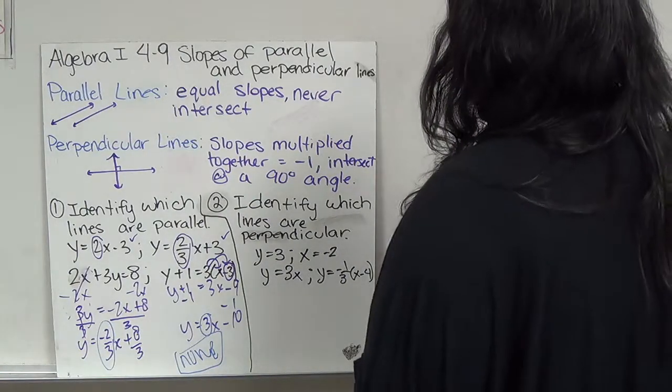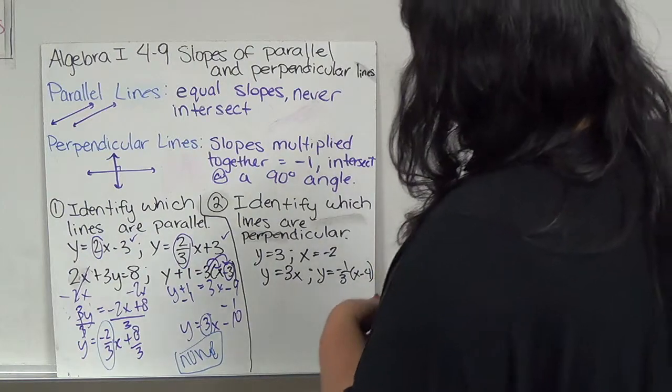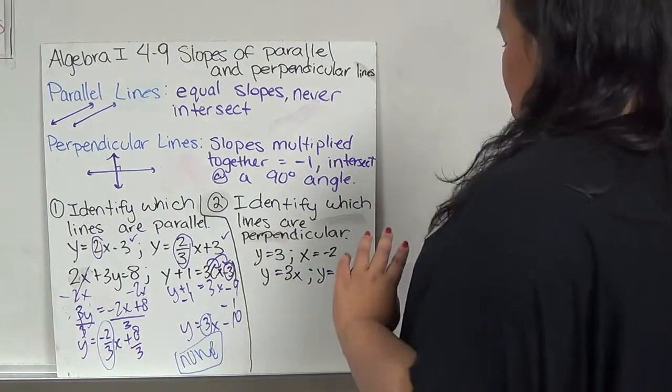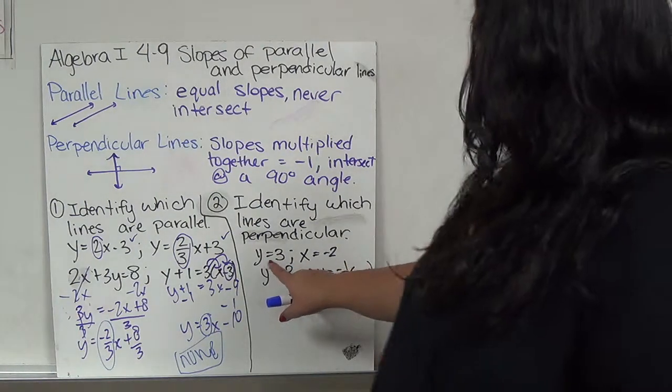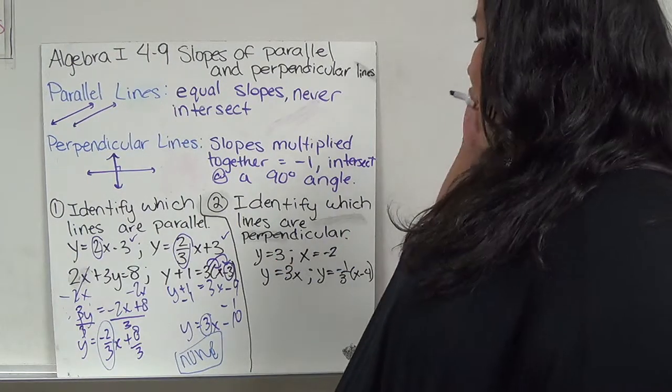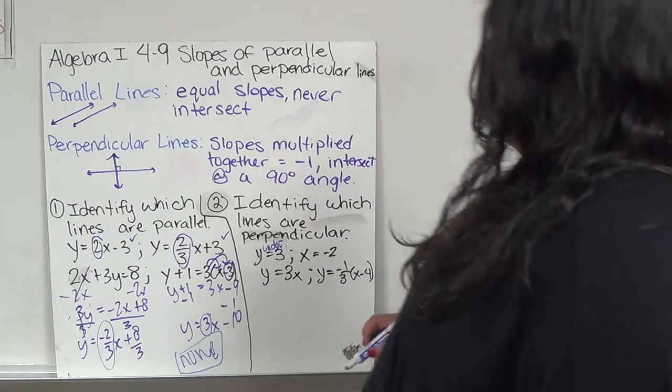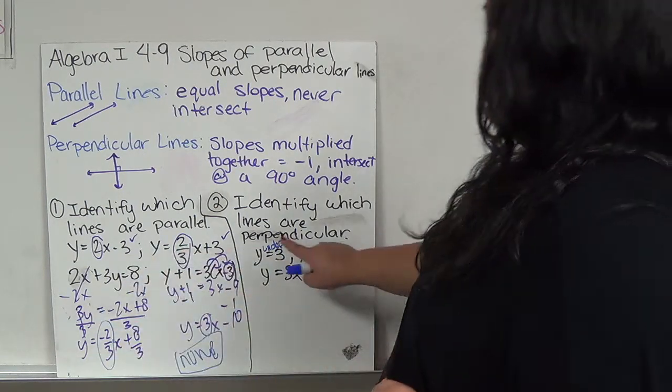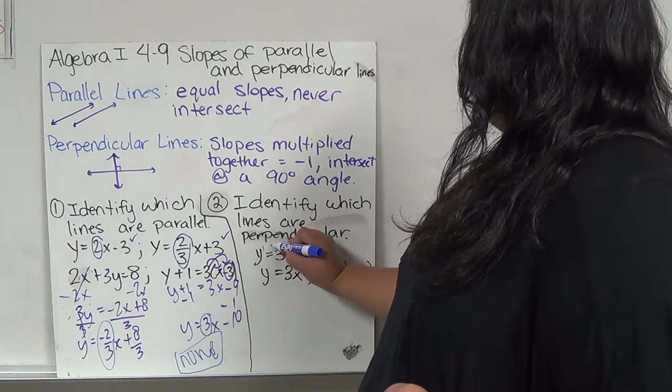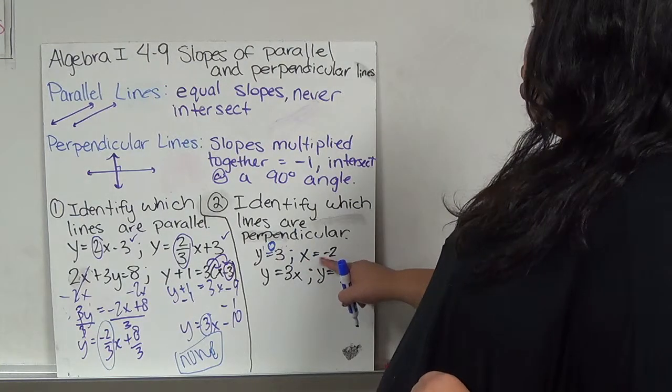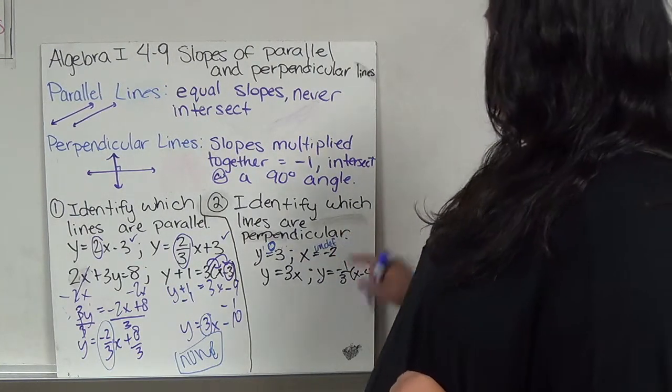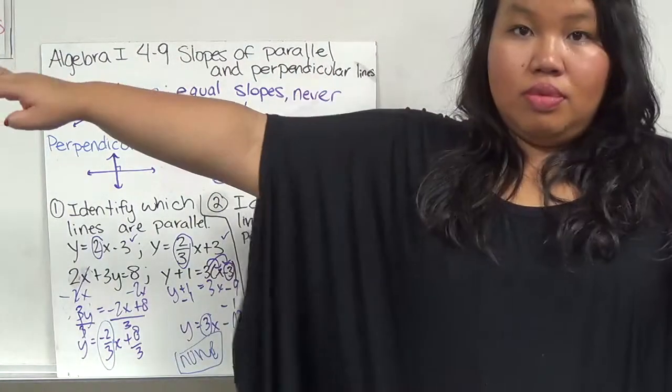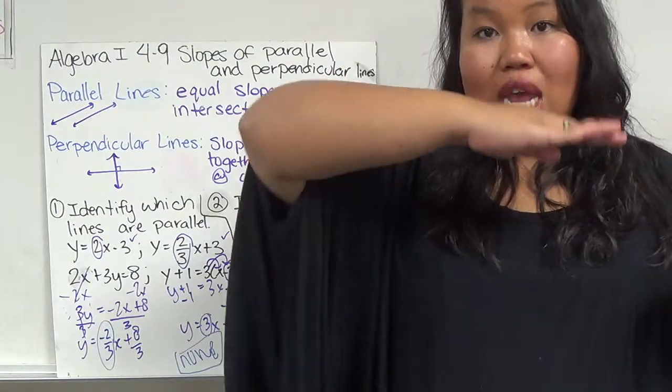The next one wants us to identify which lines are perpendicular. This one we're looking for when you multiply them together, negative 1 or negative inverses. For this one, the slope, when there's no x value at all, the slope is undefined. When there's no x value, the slope is 0. When there's no y value, it's undefined.